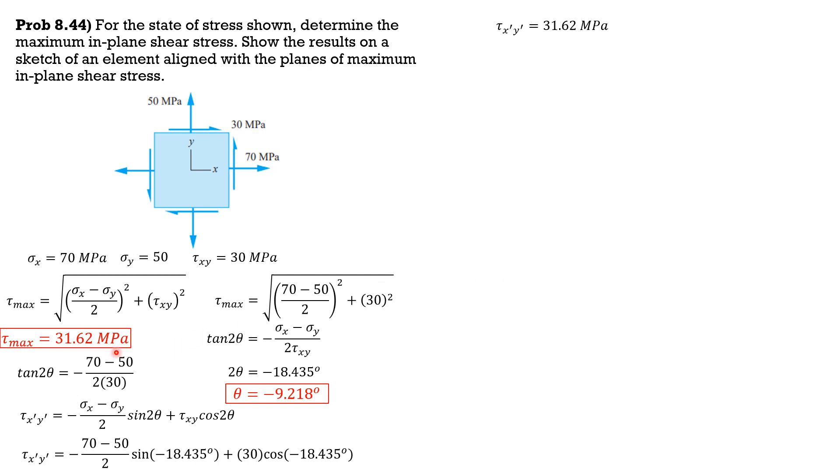And the normal stresses on this plane will be (sigma x plus sigma y) over 2. So 70 plus 50 divided by 2 is 60 megapascals, so it is tension.